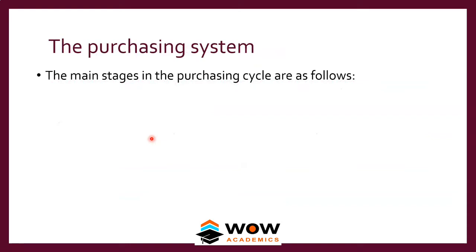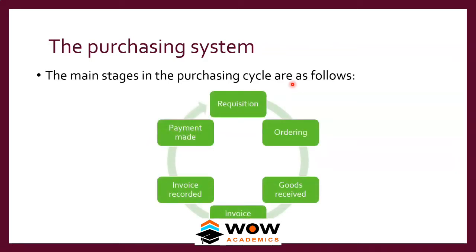We will start from the example of the purchasing system. The main stages in the purchasing cycle are as follows. Assume you are the purchase manager. What happens is you will get a requisition from so many employees — it can be an HR manager, admin manager, or a production manager — a requisition for purchase.